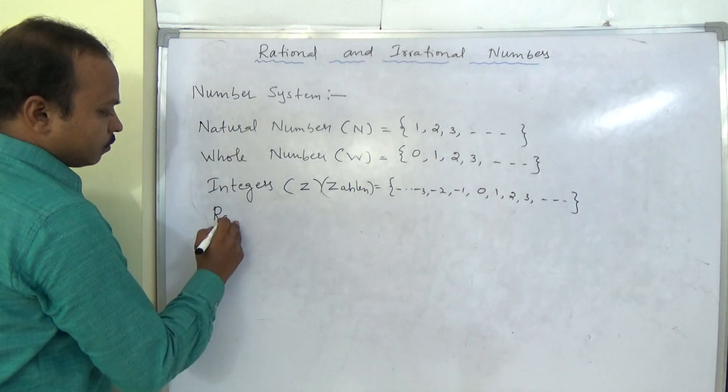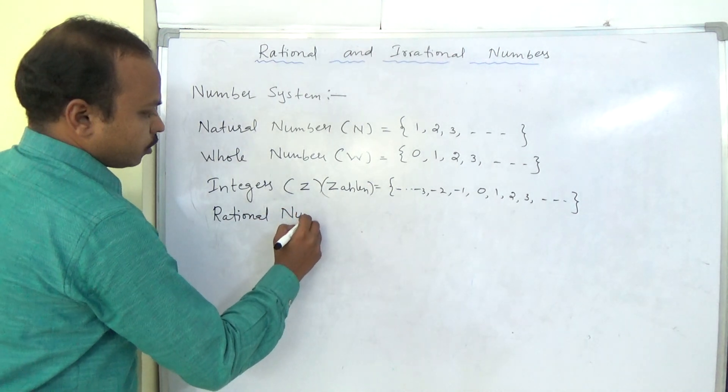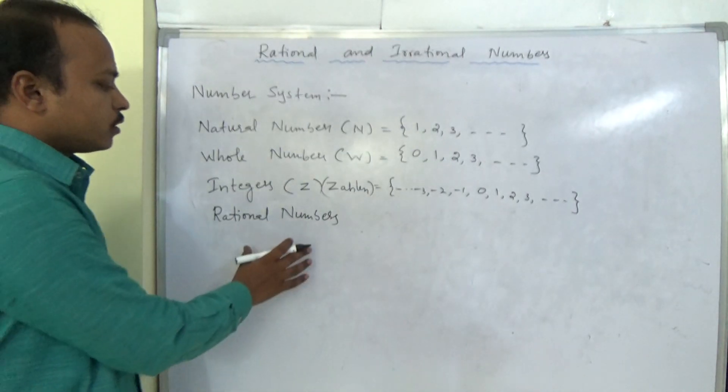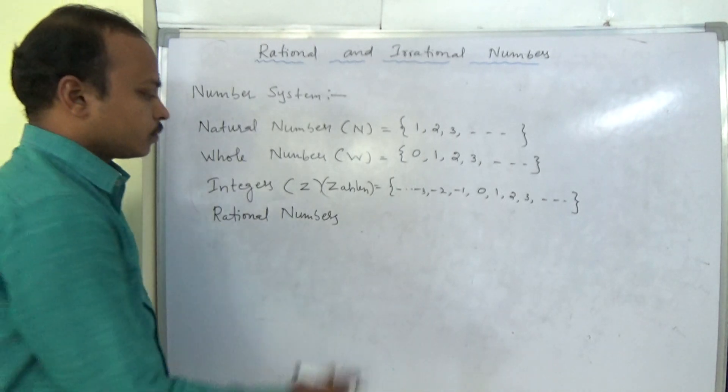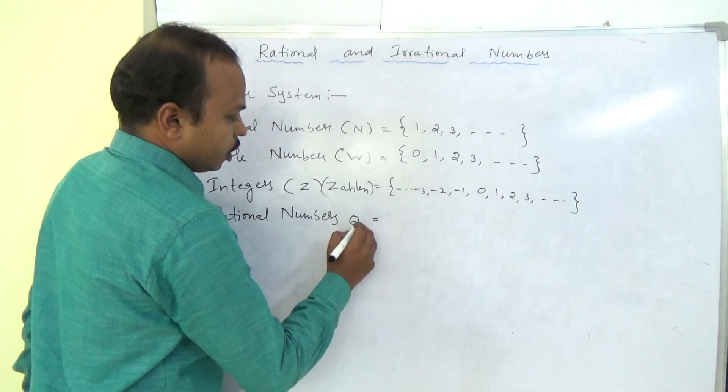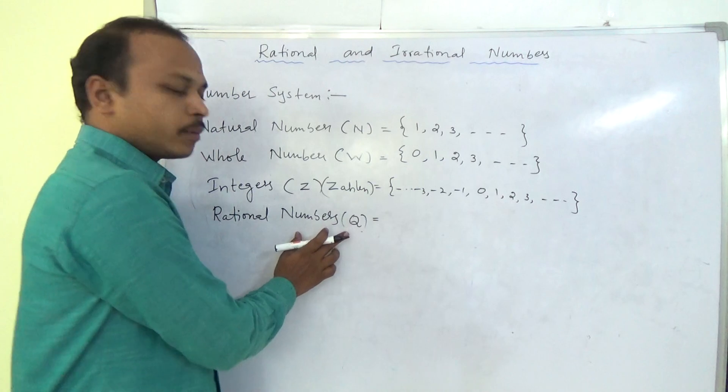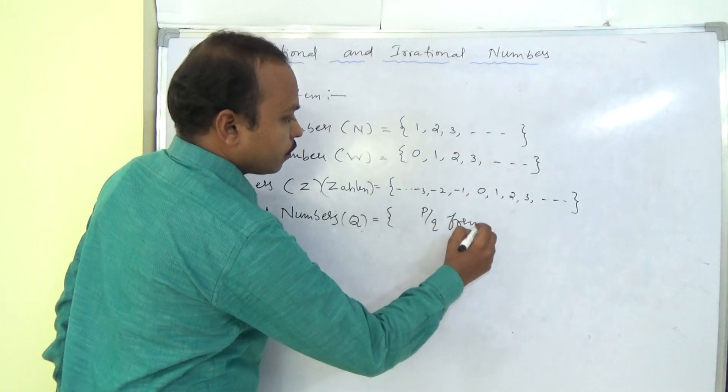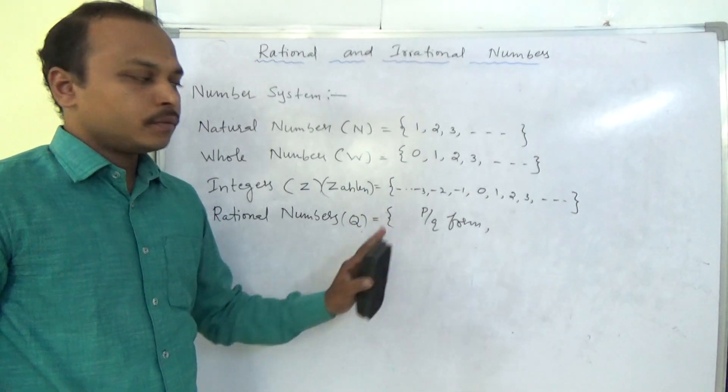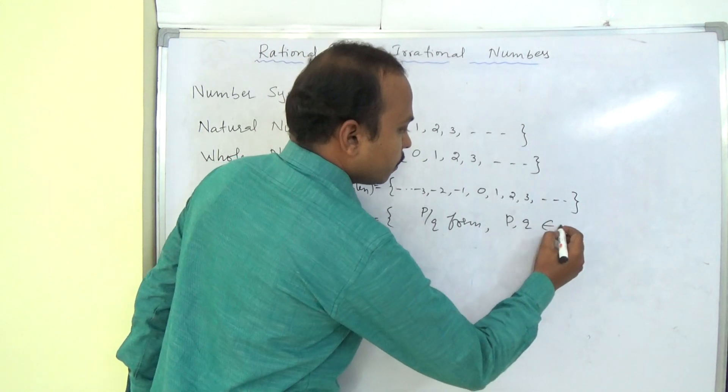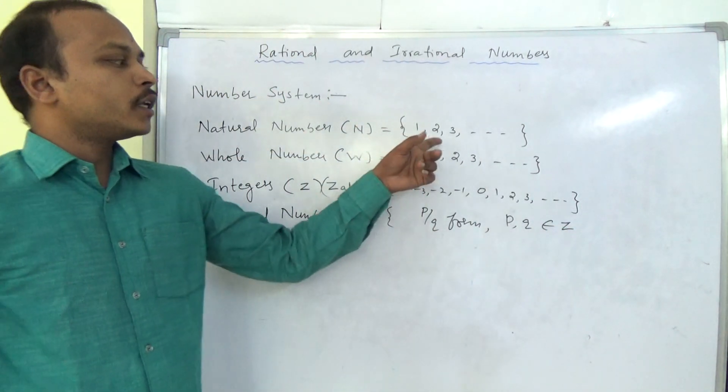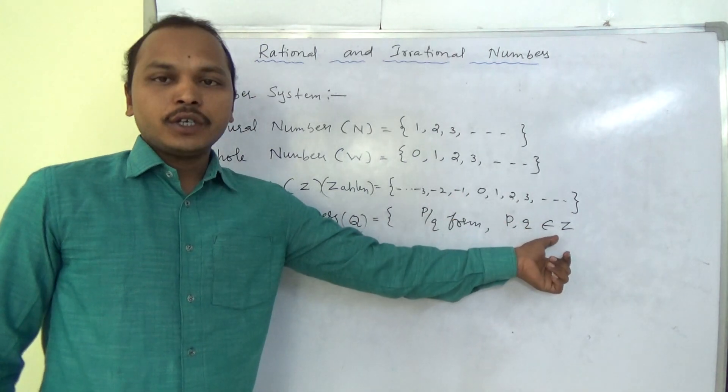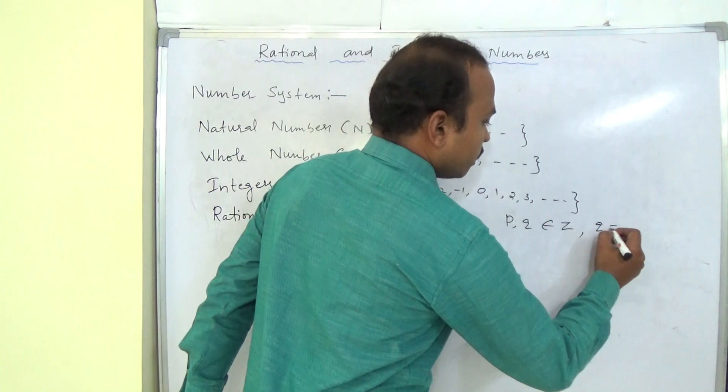Next we have rational numbers. Rational numbers. Actually this is our topic in this chapter. We will briefly discuss in next topics. First we will have a look, what is rational number and how it is. Rational numbers, we will denote with Q. This is also German quotient. We will denote with Q. Now these are in the form of p by q. p by q form. That means numerator and denominator. Here, p comma q should belong to integers. Because all the natural numbers are in whole numbers. All the whole numbers are in integers.